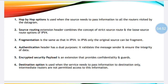Finally, coming to fragmentation — fragmentation is the division of packets. Some packets are too large to be sent, so they should be fragmented. Authentication header has a dual purpose: it validates the message sender, checking whether the sender is genuine or not, and it ensures the integrity of data — meaning the content of a message should not be changed and should remain intact.